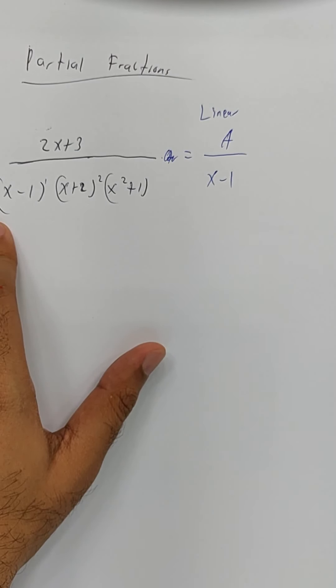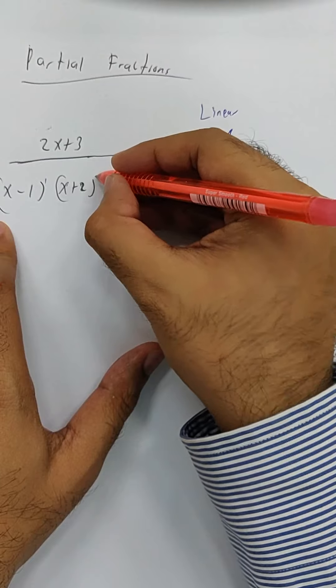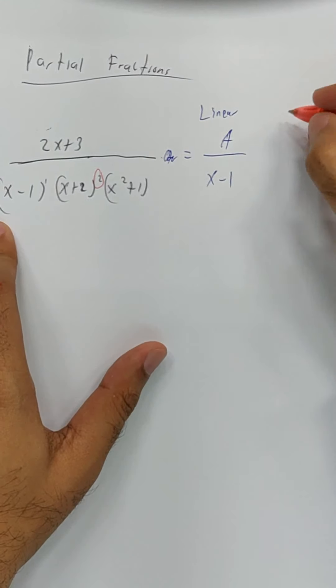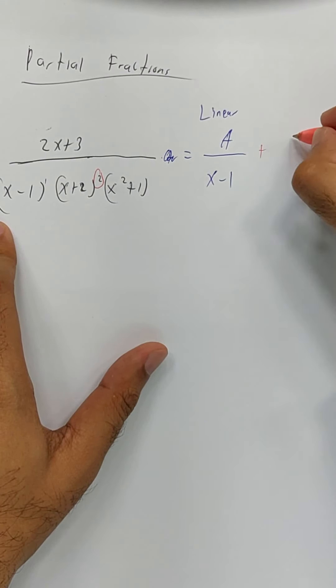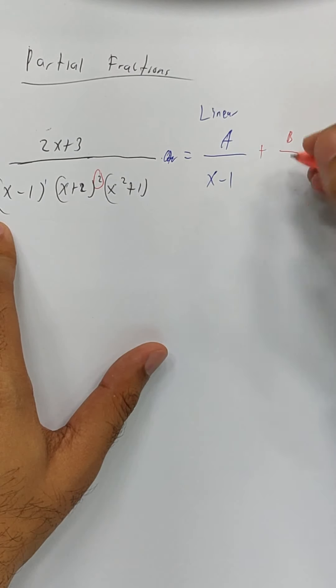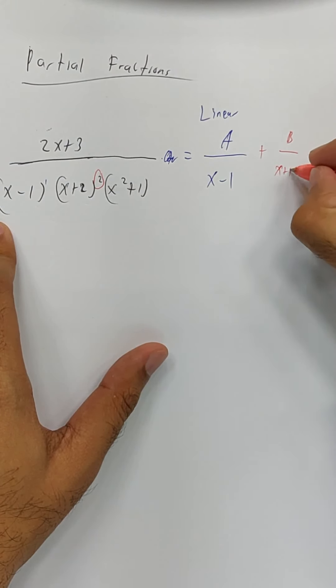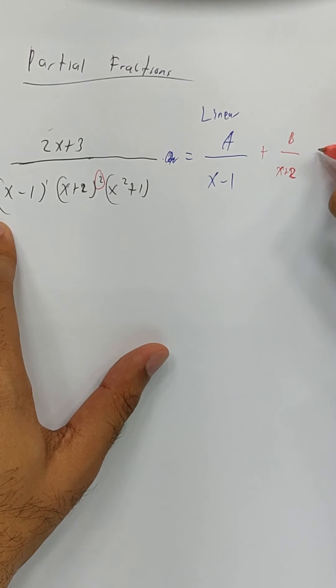The second type is when you see squared here, so we do this: b, the letters increasing after a is b, over x plus 2, plus c over x plus 2 squared.